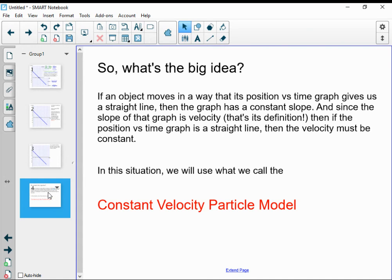So the big idea here, if we graph the motion of some object, any object, not just a toy car, but if that graph gives a position versus time graph that's a straight line, then we always have the same slope because that's what straight lines are. Since the slope of that graph is velocity, then straight line position versus time graphs have constant velocities, unchanging velocities. The velocity stays the same.